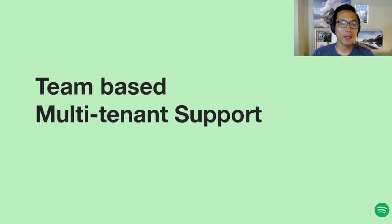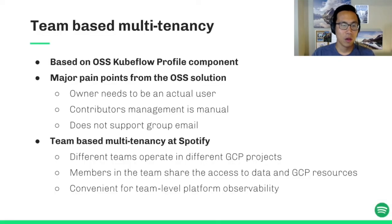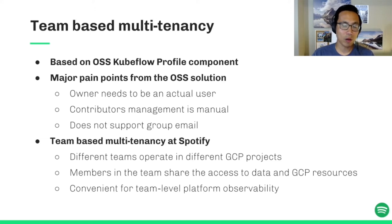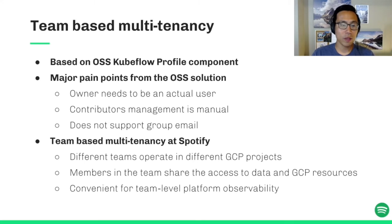Let's start with the team-based multi-tenancy setup. When we started working with Kubeflow, there was no multi-tenancy support — everything was running on a single namespace, including Kubeflow services and actual user pipelines. In early 2020, multi-tenancy was introduced in Kubeflow Pipelines and we were one of the first teams that worked with Google to adopt it. It's based on the open-source version of the Kubeflow Profile component, where each profile corresponds to a namespace on the cluster and you can configure the owner, contributors, and service account used for the namespace. Although it provided basic multi-tenancy features, it came with several drawbacks that didn't work well with our internal team structure.